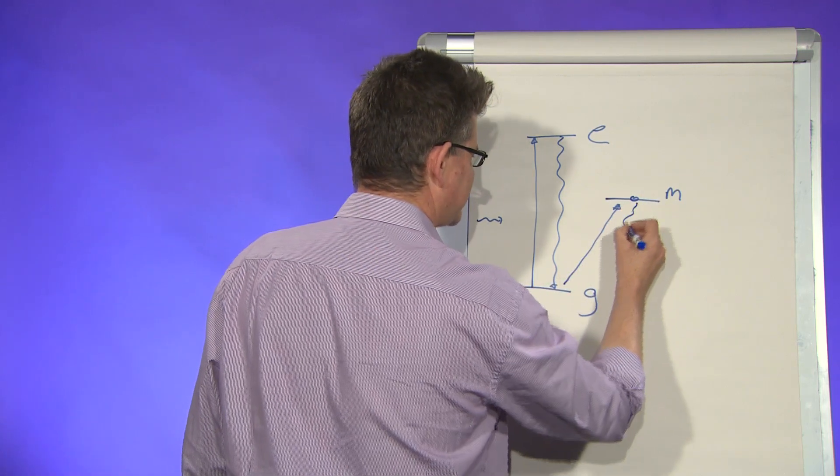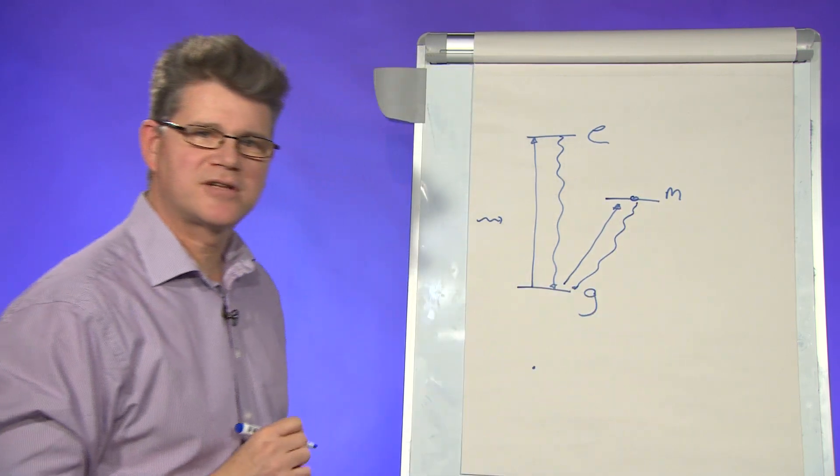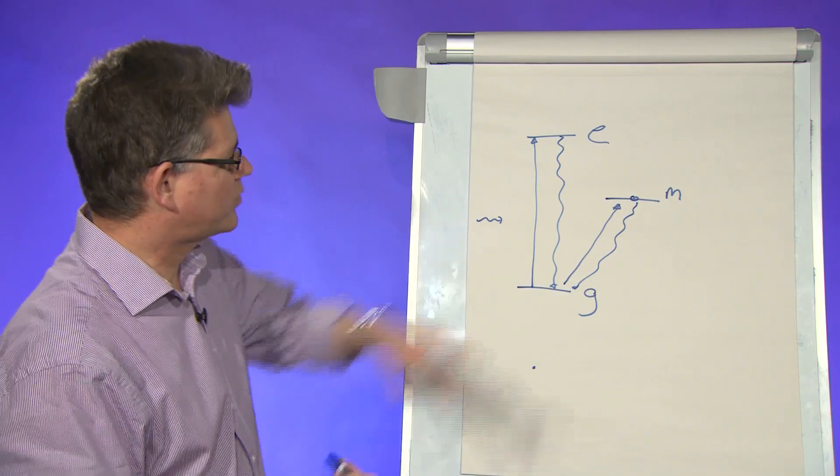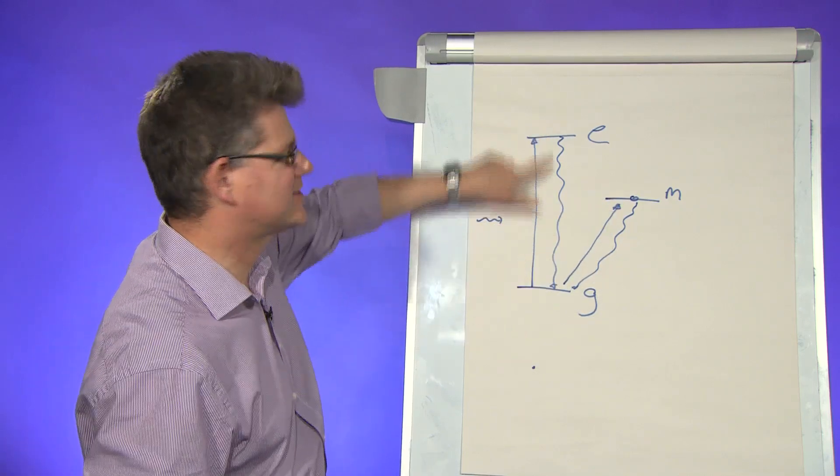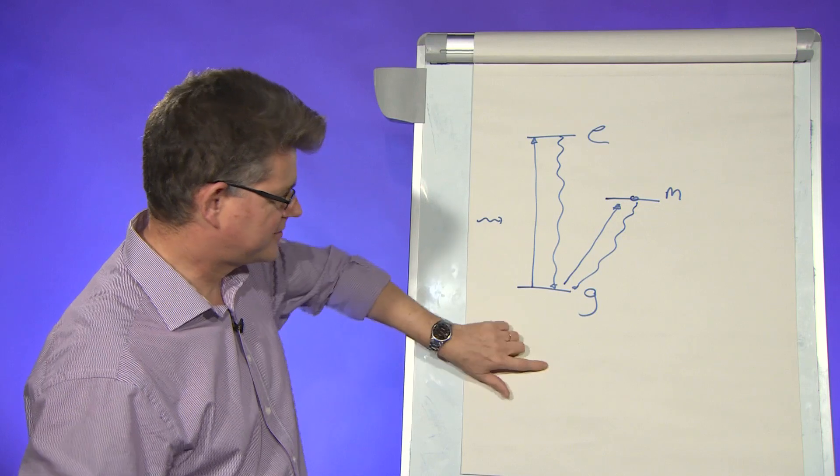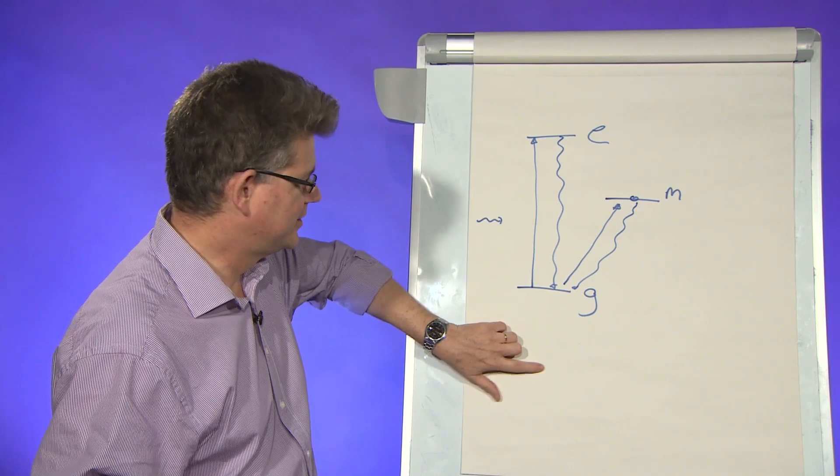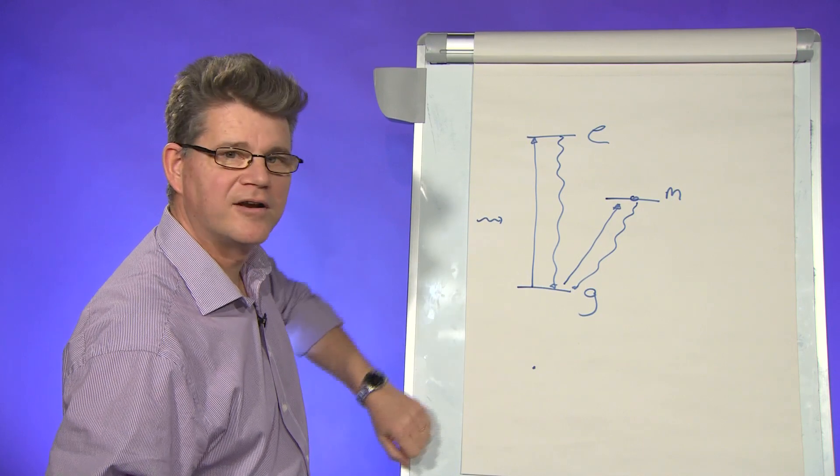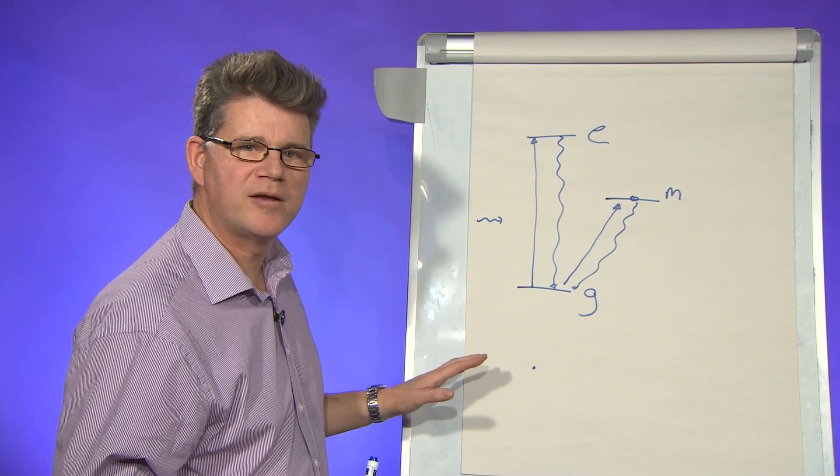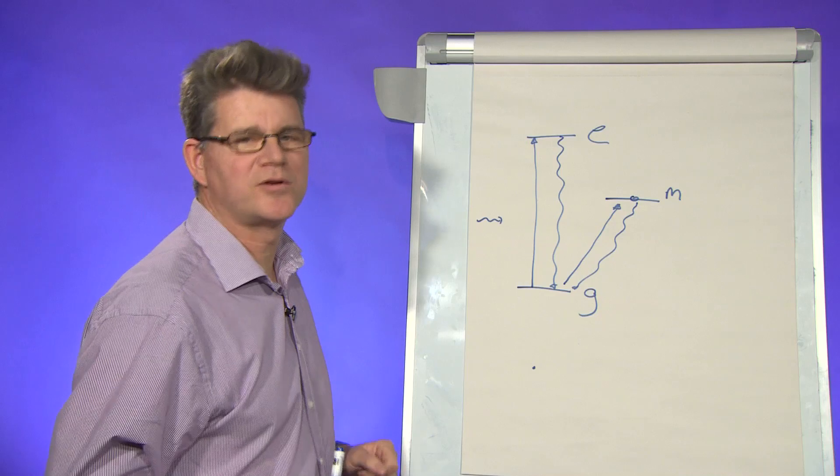What happens next is, after a second or so, it comes back down to the ground state. The important thing is that whilst it's sat up here, it can't do this, and so what happens is the light switches off. It does that entirely randomly, but I can see it. So the light goes on and off and on and off in a completely random way, and that's actually seeing quantum jumps.